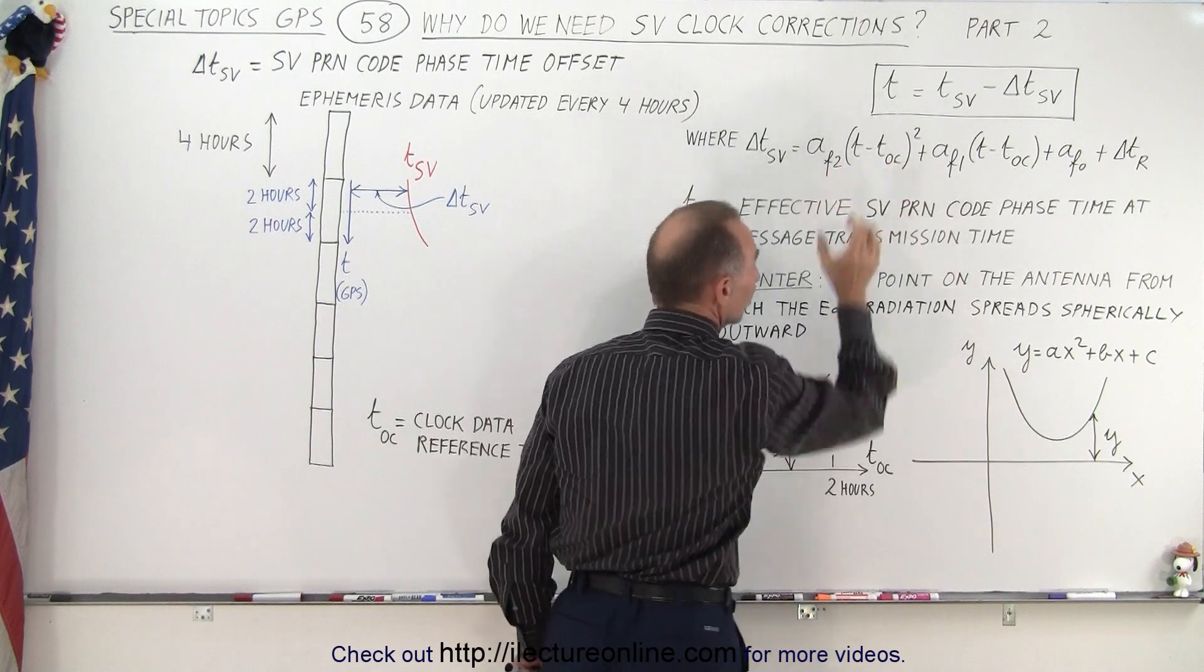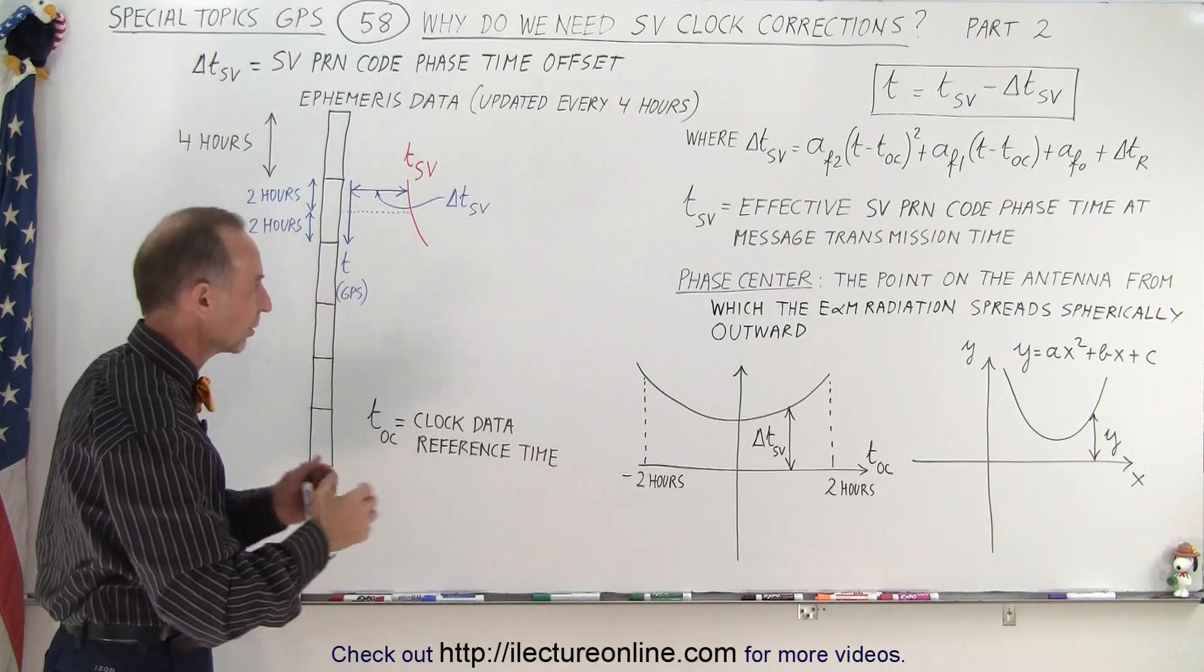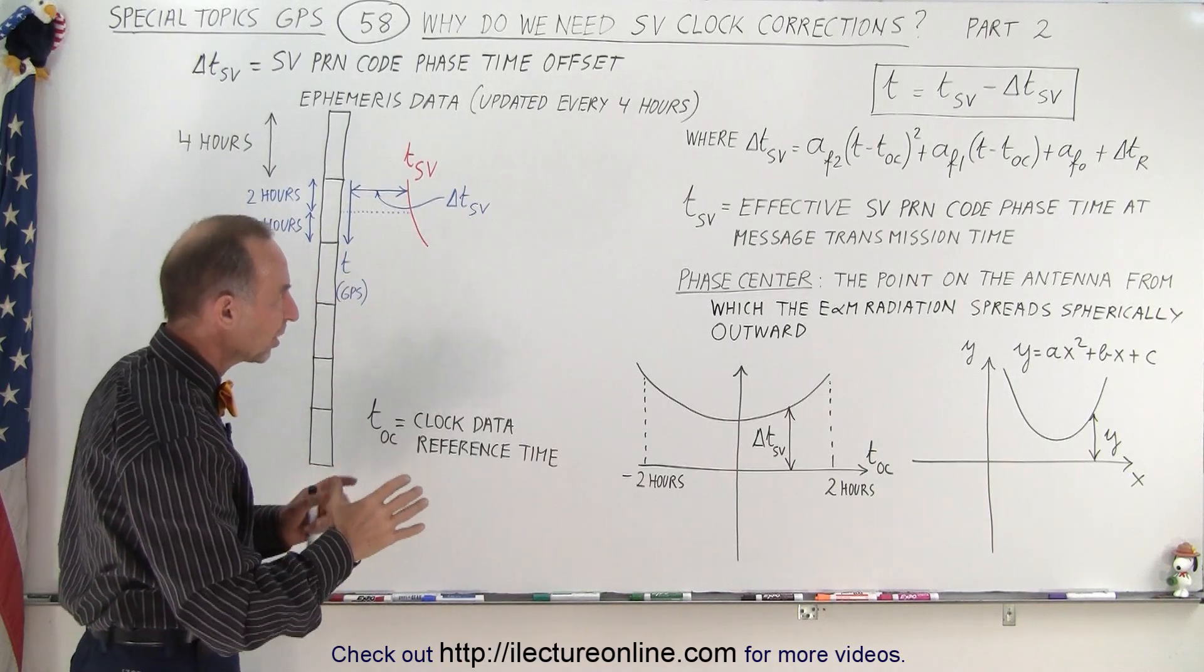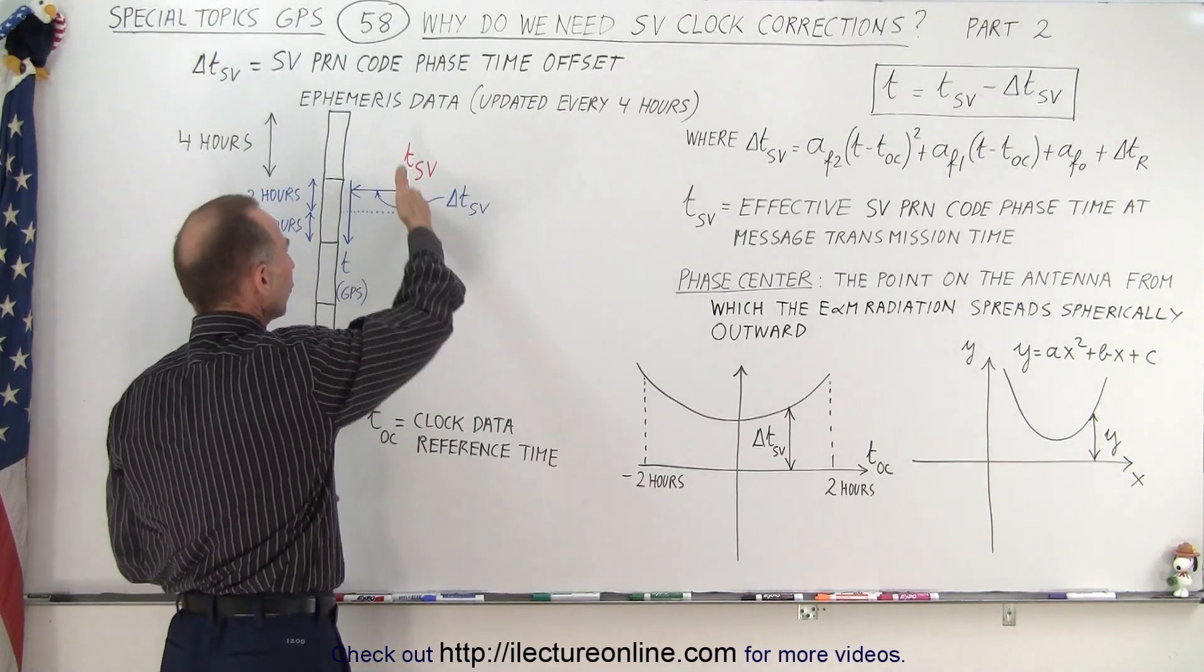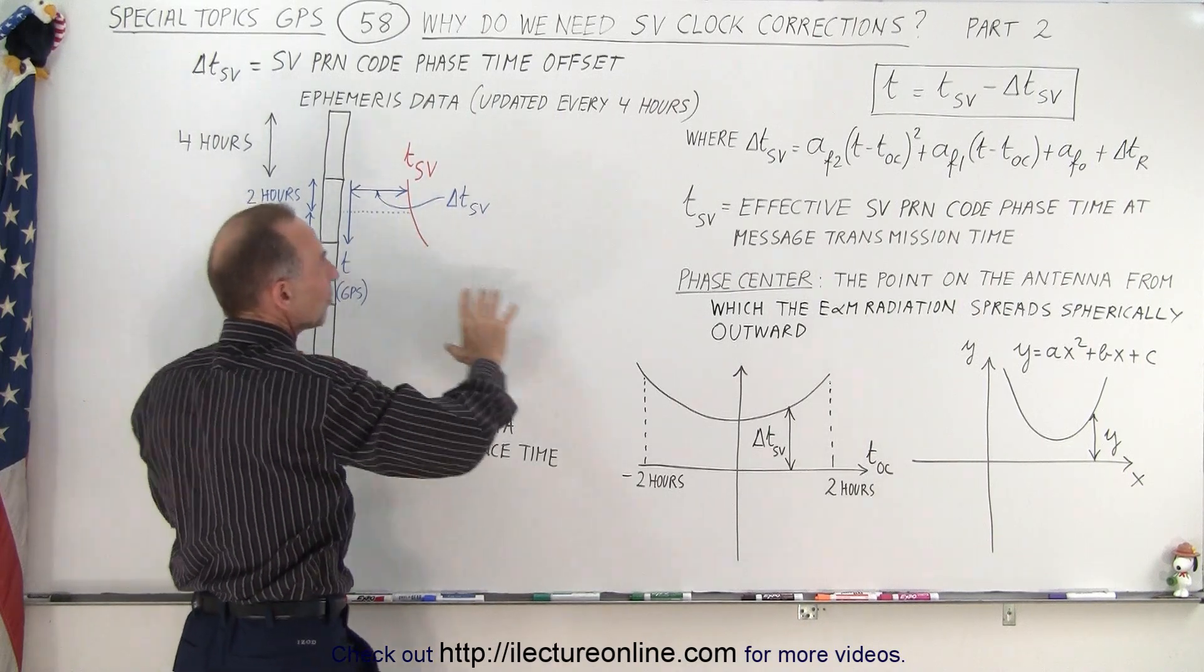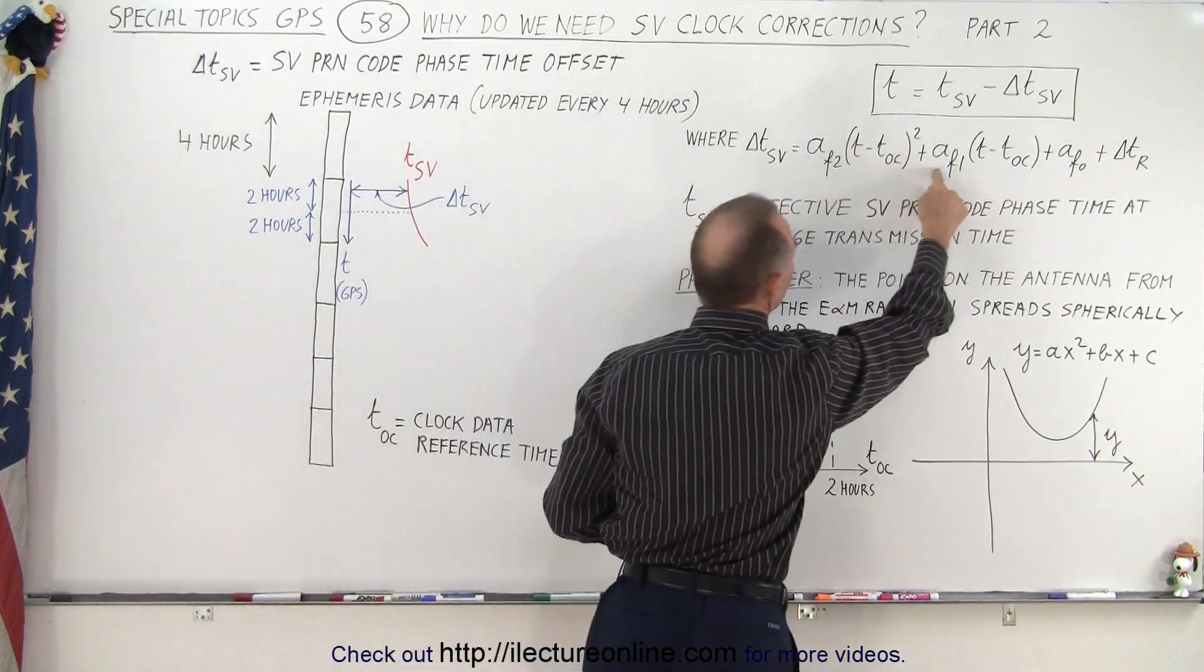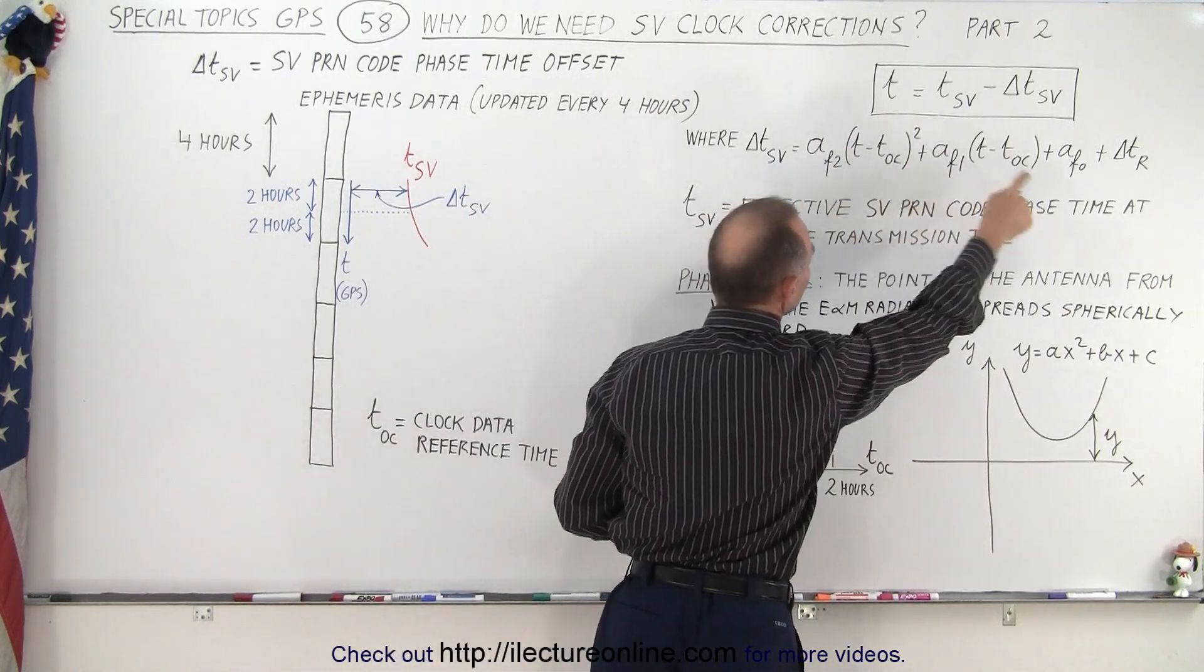So you can see that this curve which represents the SV time simply needs to be represented by some sort of quadratic equation. Notice that we have the three constants AF2, AF1, and AF0, which is like the a, b, c in our quadratic equation.